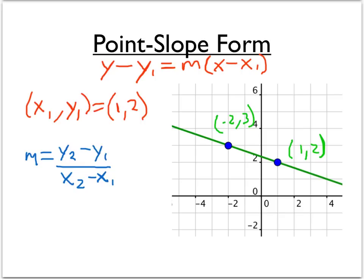So we'll use these two points and we'll plug in their coordinates. So we've got 3 minus 2, and then we'll divide by negative 2 minus 1. So that gives us 1 divided by negative 3. And there's our slope.